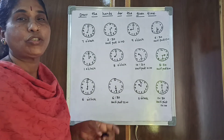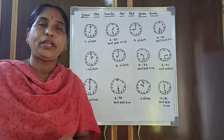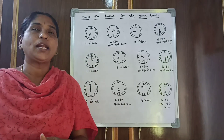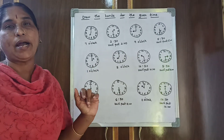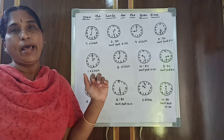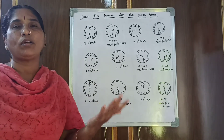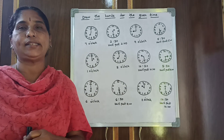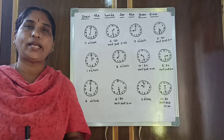So watch the video, see the PDF, and write in your classwork book. Draw the clocks with the bangle, write the numbers, then see the time and draw the hands. Thanks, and is it clear children? Thank you.